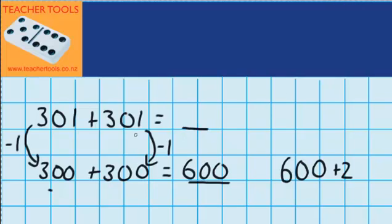And the reason I'm adding on 2 is because over here I pretended that this 301 actually didn't have this one, and it was just 300. And I pretended that this 301 also didn't have the 1. It only had 300. But now I have to add these amounts back on. So 600 plus 2 equals 602. So 301 plus 301 must equal 602.